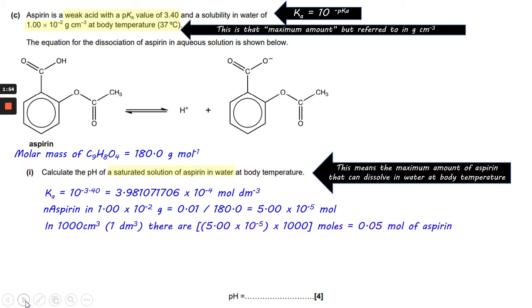And scaling that up to 1 dm³ by multiplying it by 1000, that means there's 0.05 moles of aspirin in 1,000 cm³. Which means we can say that the concentration of aspirin in a saturated solution of water at body temperature is 0.05 moles per dm³.